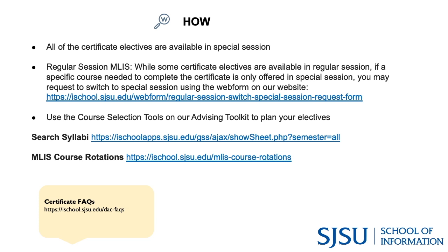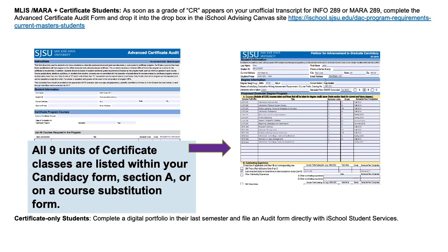You can also search previous syllabi from our advising toolkit. We have an FAQ dedicated to the subject of the advanced certificate and strategic management of digital assets and services — the link is on the slide. At the end of your master's program, you will download the advanced certificate audit form from our website, fill it out with the nine units of electives from your master's program that fulfill one of the three pathways, and drop this into the Dropbox on our advising site in Canvas.